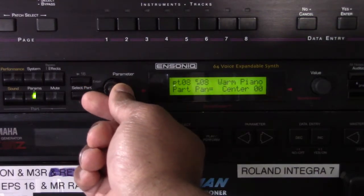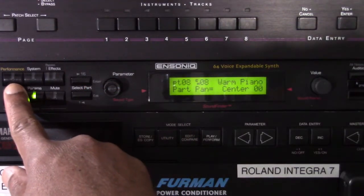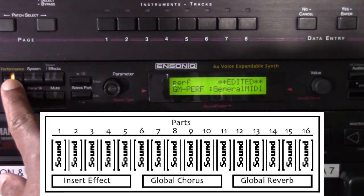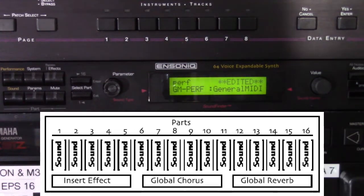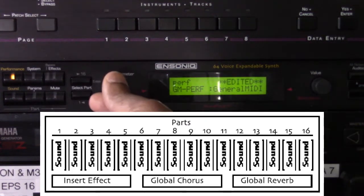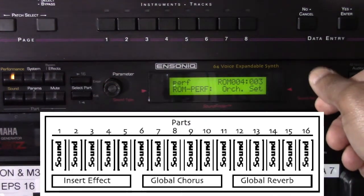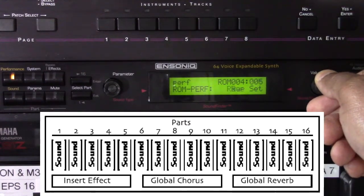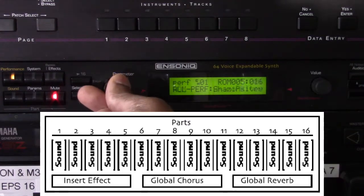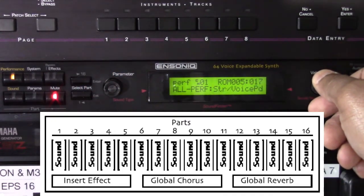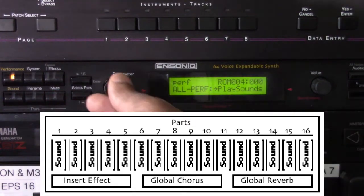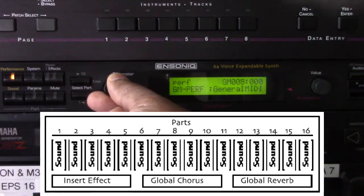A performance is a collection of 16 parts, including all the sounds they contain, any alterations made to them, and the complete effects sound setup. You can save performances to the MR Rack's internal memory, which is useful for keeping track of sounds and settings for a particular song, project, or live performance.